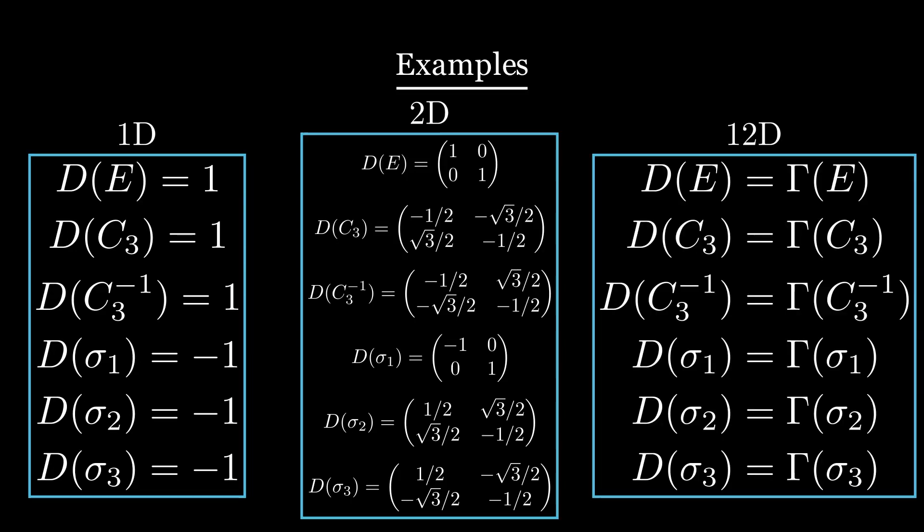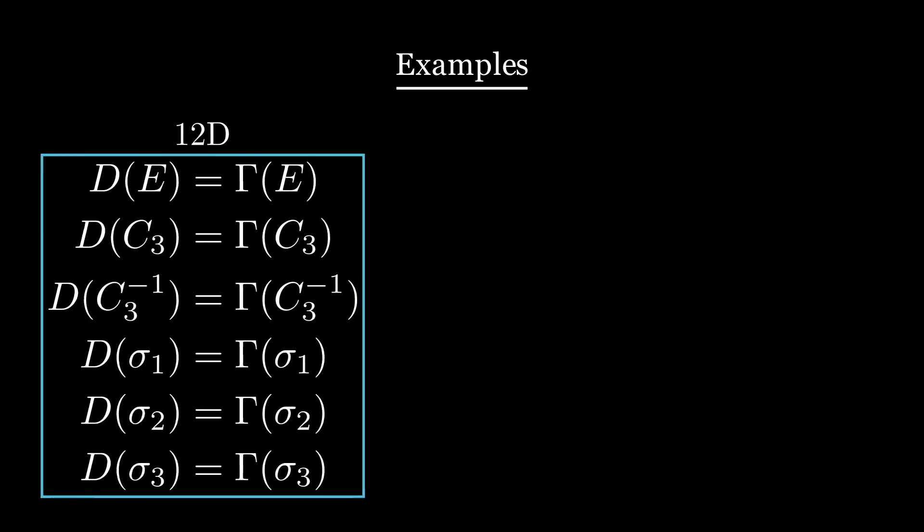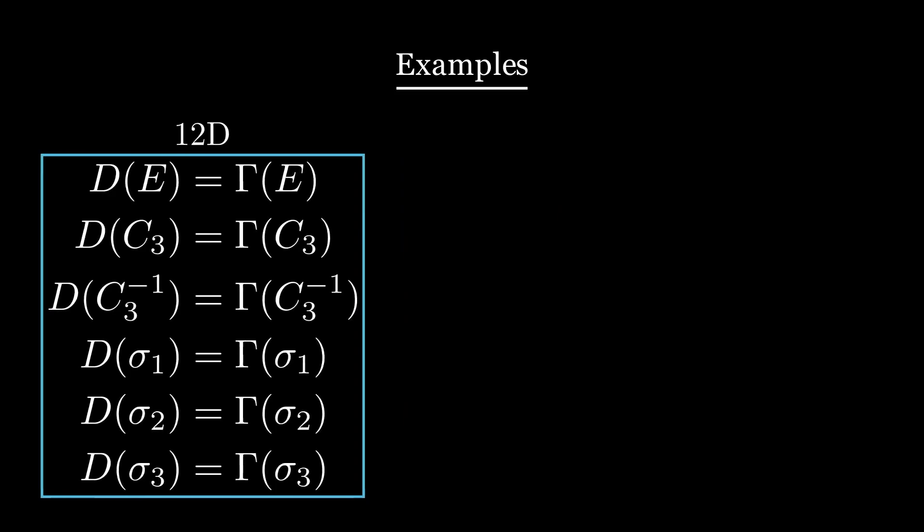Finally, remember the 12-dimensional gamma matrices representing the invariant transformations of the NH3 molecule. They also form a representation, since they obey to the same product law as the group. Since we saw that operating c3 and then sigma1 is equivalent to operating sigma2, the transformation gamma of c3 followed by gamma of sigma1 is equivalent to the transformation gamma of sigma2.